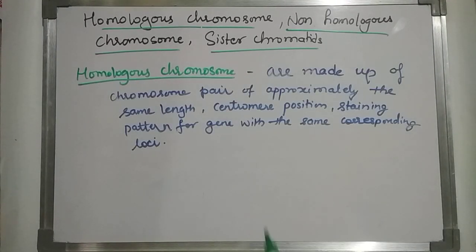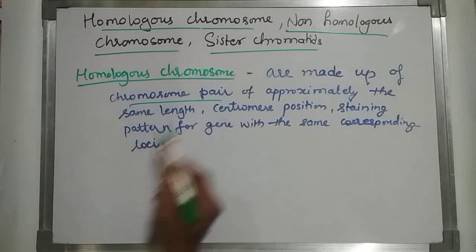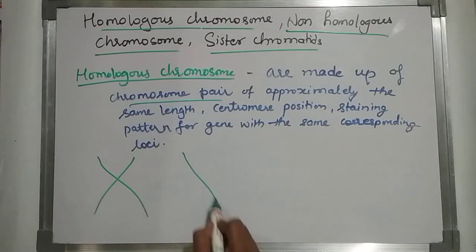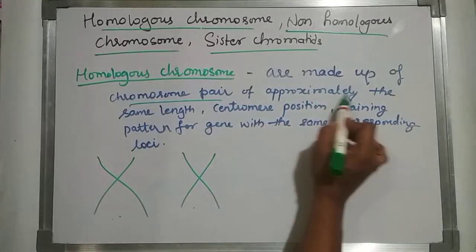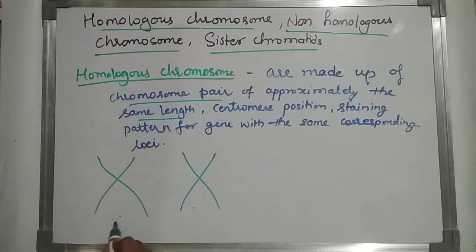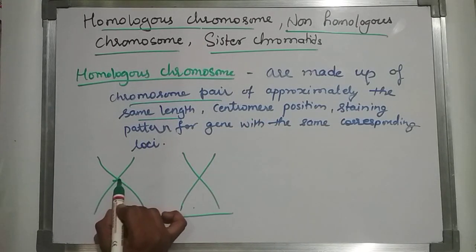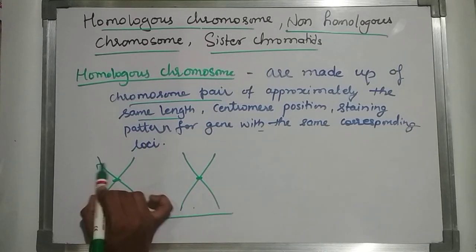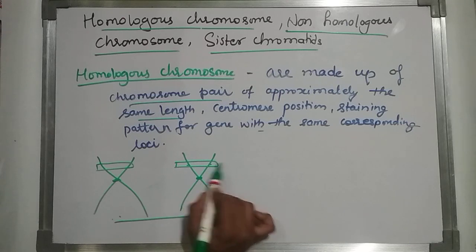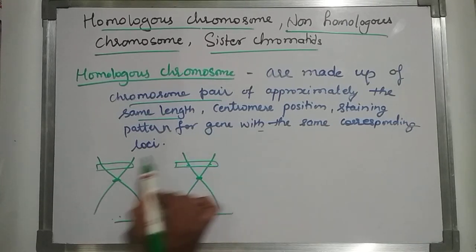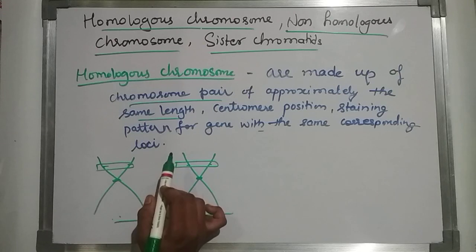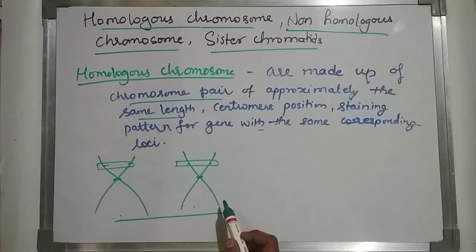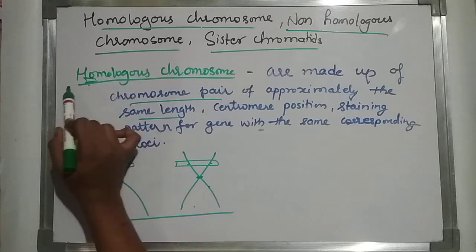Homologous chromosomes are made up of a chromosome pair — one chromosome and two chromosomes constitute a pair of approximately the same length, same centromere position, and the same staining pattern of genes with the same corresponding loci. This is called a homologous chromosome. Homo means same — same looks, same length, same centromere position.